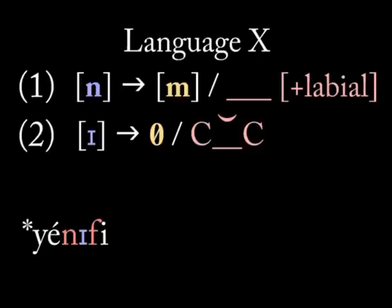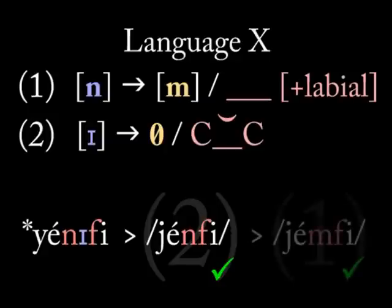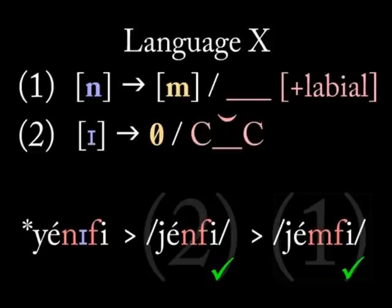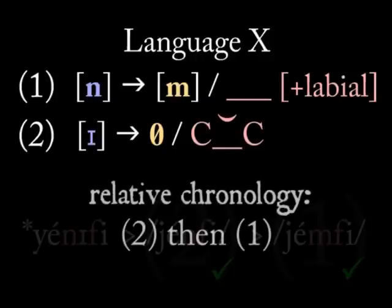Try the reverse order. Rule two turns YENIFI into YENFI. And now rule one can apply, leaving us with YEMFI — which is exactly what we find. So it looks like rule two took place before rule one, which is our relative chronology.